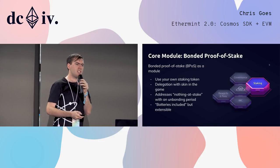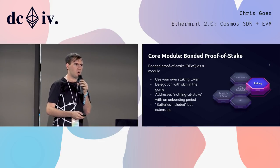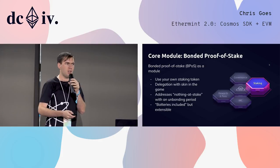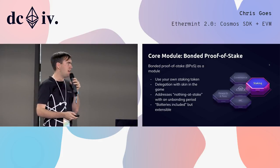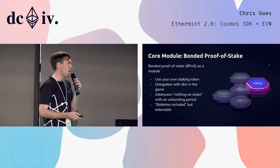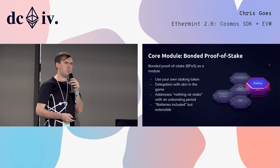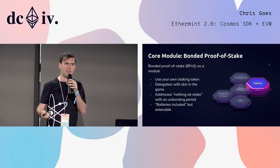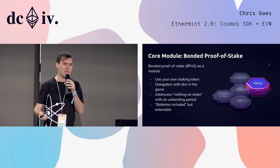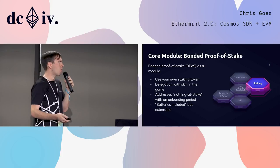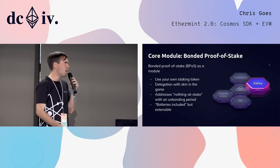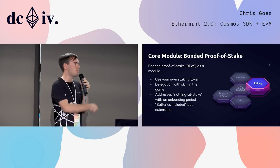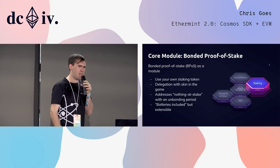In order to make it as easy as possible for developers to start working on full-function blockchains using the SDK and Tendermint, and in order to build the particular blockchain we're working on — the Cosmos Hub — we've built some core modules. The first module is bonded proof-of-stake.